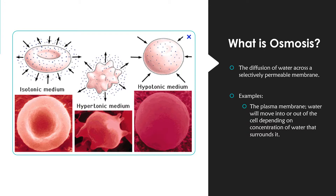Now diffusion and osmosis are a little different. If you're just referring to diffusion, this can be the diffusion of odor molecules, dye molecules, etc. Osmosis is specifically the diffusion of water across the selectively permeable membrane — regarding, for instance, the plasma membrane. So water will often move in or out of the cell depending on the concentration of water surrounding the cell.